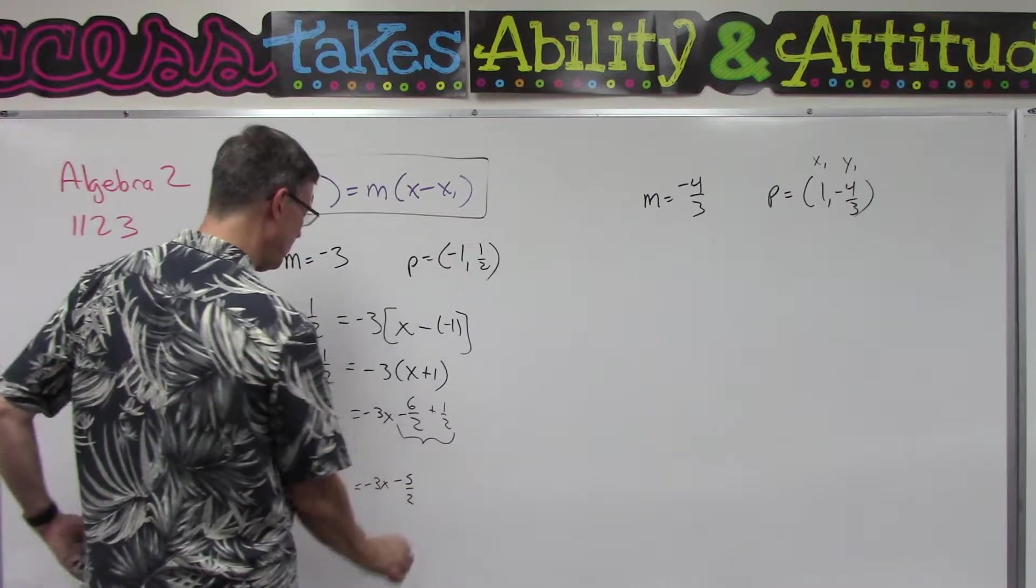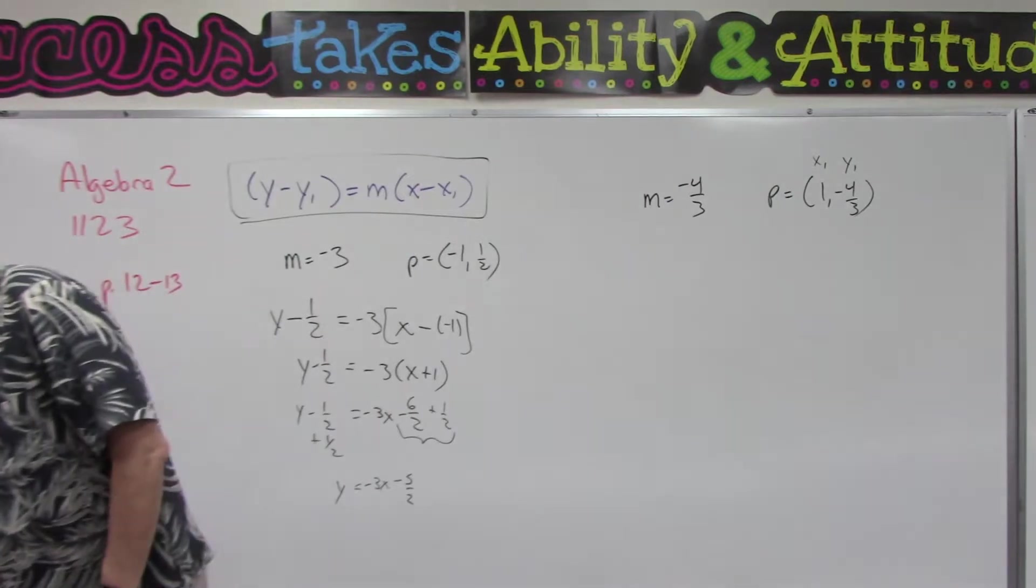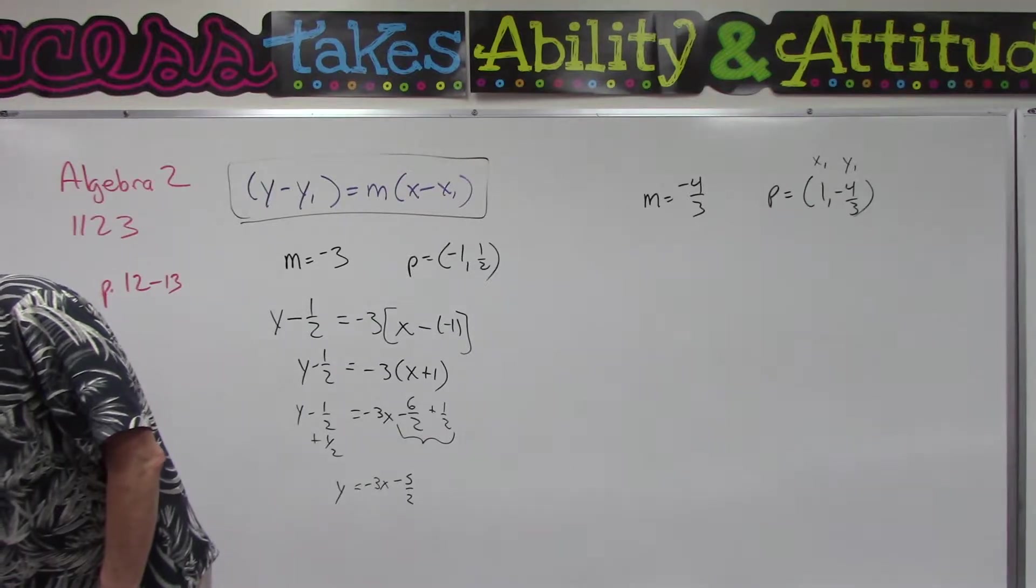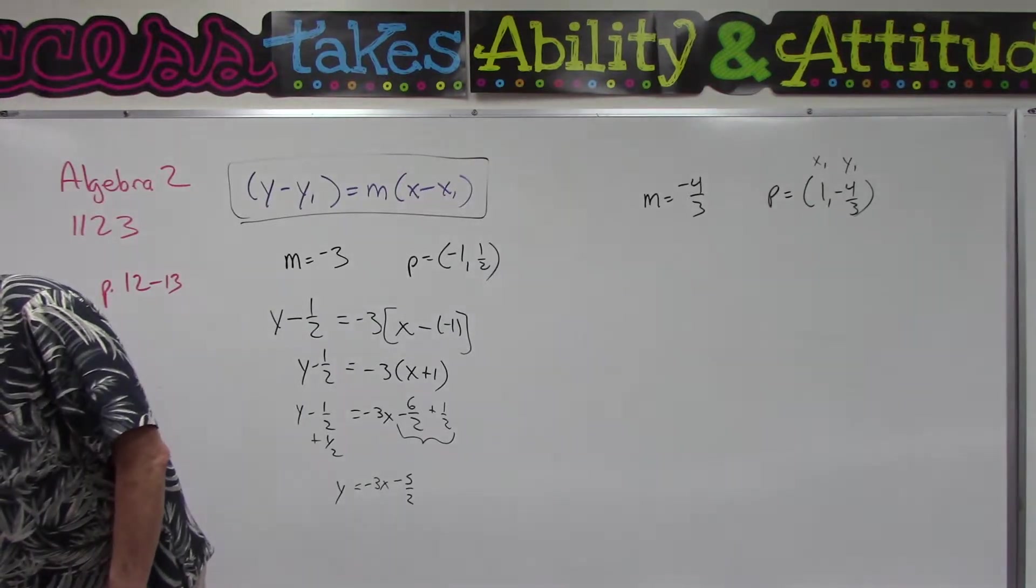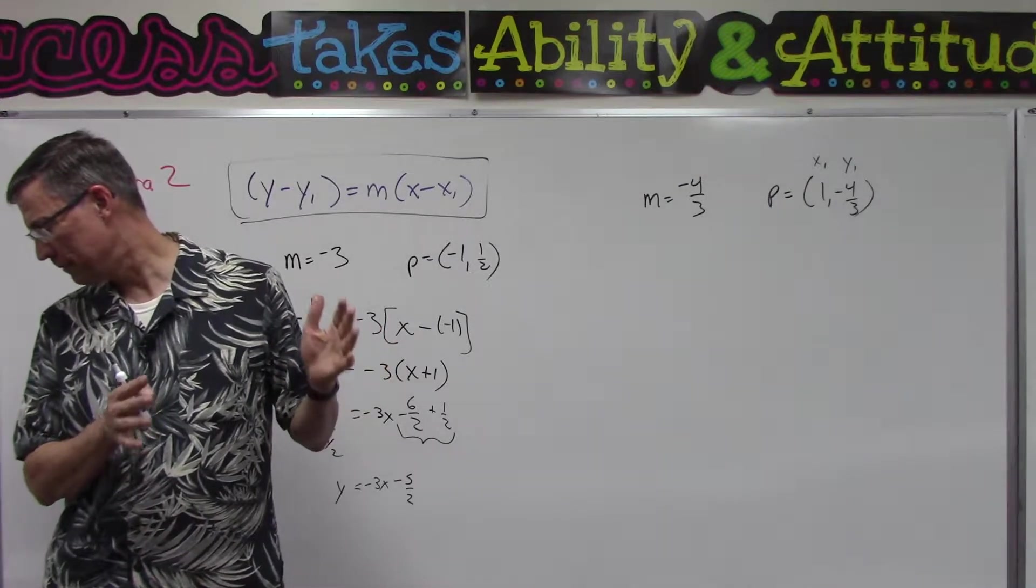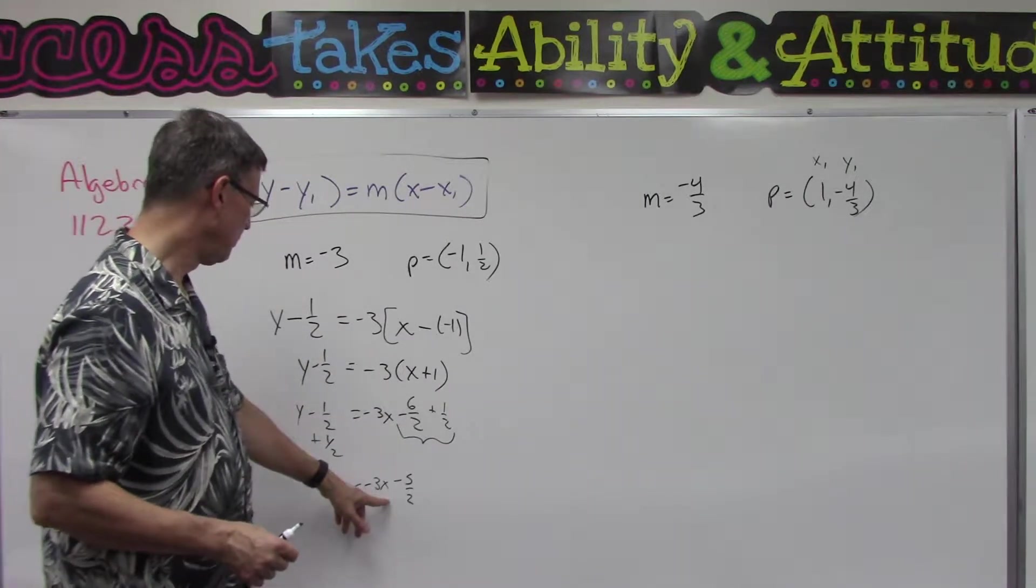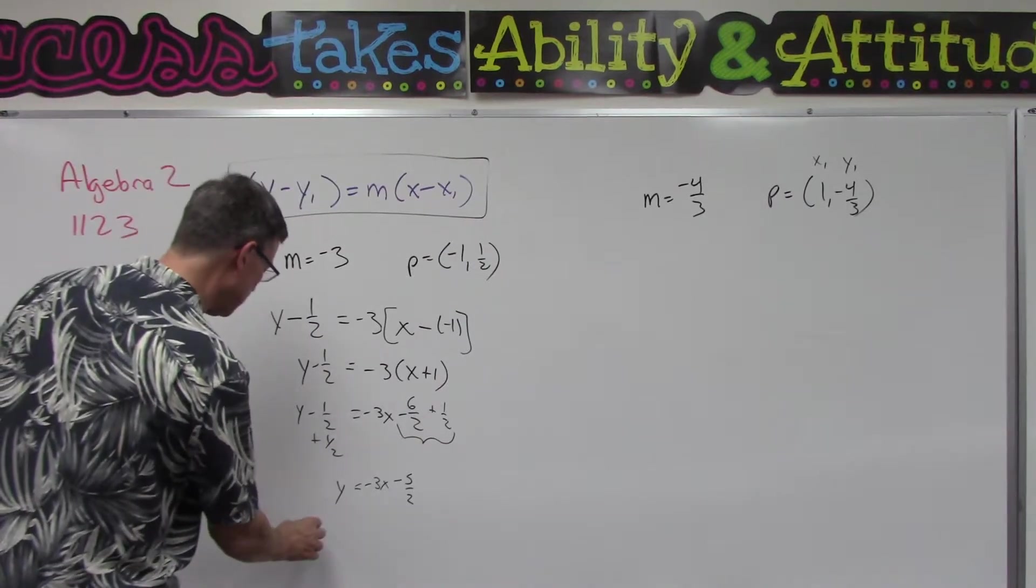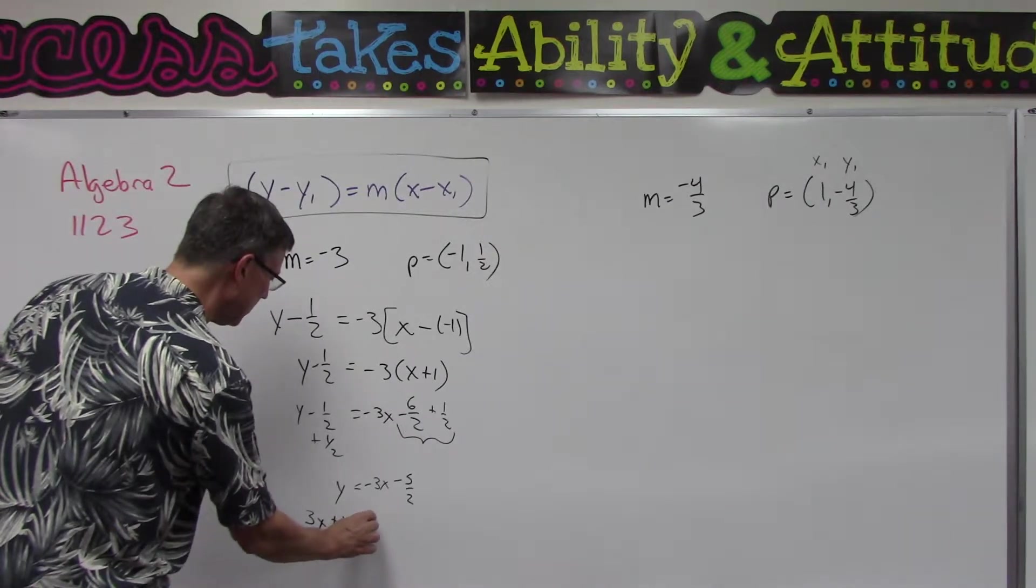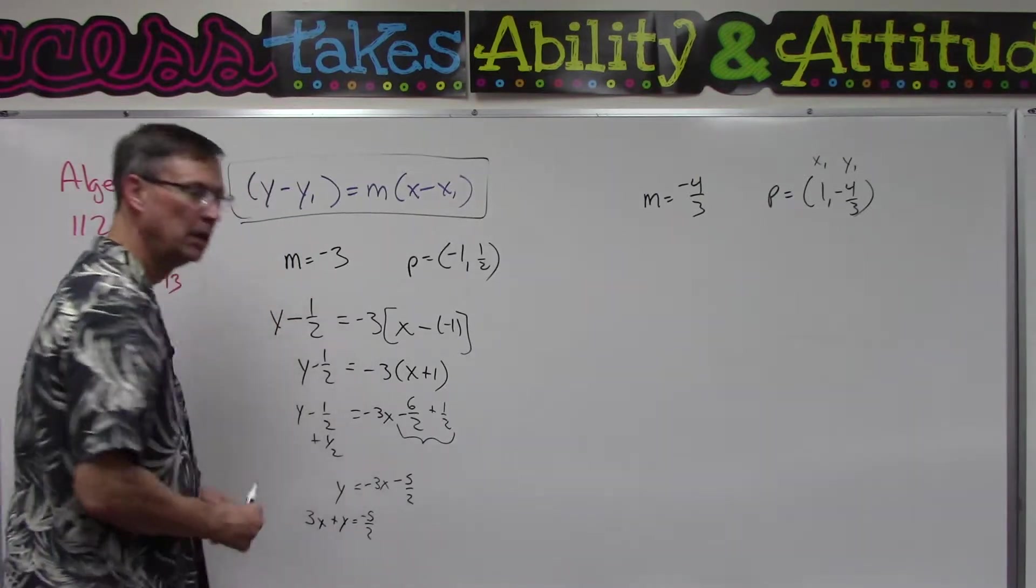Now my question is, how do they want us to write the equation? They want us to rearrange it so that we have the x and the y on the left - the x term, the y term - and then the constant. So we actually want to bring this 3x over here to this side. Switch sides, switch signs: positive 3x plus y equals the negative 5/2.